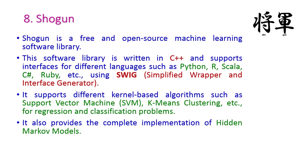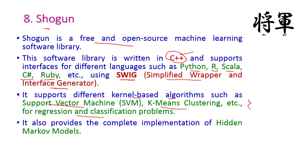The next one is Shogun, which is another popular free and open source machine learning library developed using C++, but it also supports different interfaces for languages like Python, R, Scala, C#, and Ruby, using SWIG (Simplified Wrapper and Interface Generator). Shogun supports different kernel-based algorithms like Support Vector Machines and K-means clustering for regression and classification problems, and it also provides a complete implementation of HMM (Hidden Markov Models).